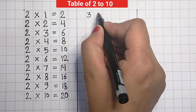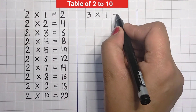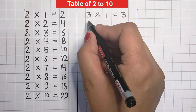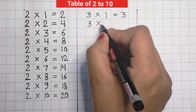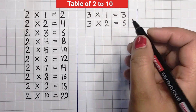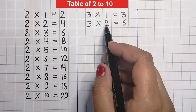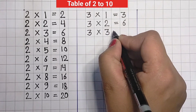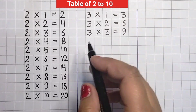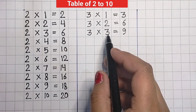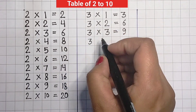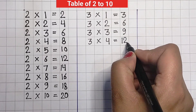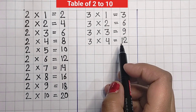Three, one jaa, three. Three, one jaa, three. Three, two jaa, six. Three, two jaa, six. Three, three jaa, nine. Three, three jaa, nine. Three, four jaa, twelve. Three, four jaa, twelve.